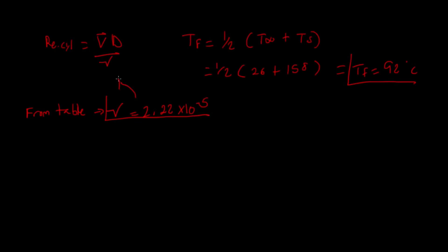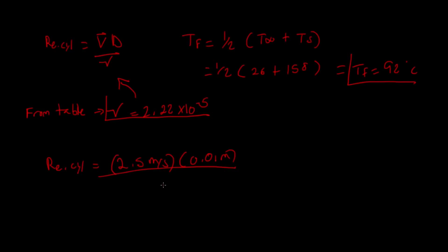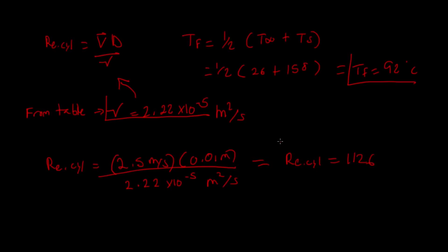Now we plug that in. The Reynolds number equals velocity times diameter over kinematic viscosity: 2.5 × 0.01 / (2.22 × 10⁻⁵). The units — meters squared per second on top and bottom — cancel out, giving a unitless result. I get a Reynolds number of 1126.